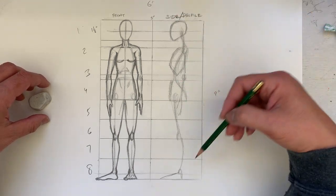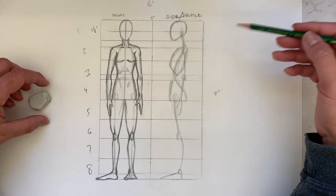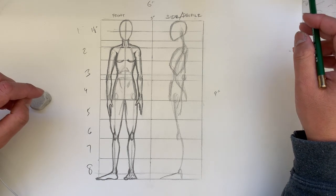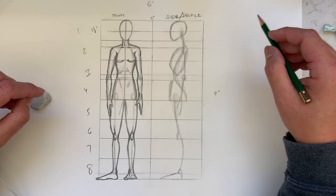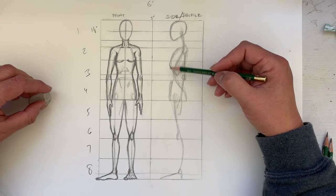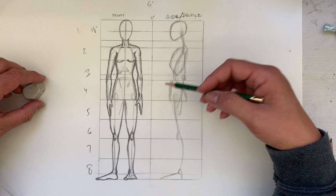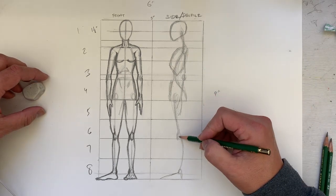So this is our basic kind of artsy skeleton where we're going to build our musculature on top of. Musculature and fat and all the other elements that make a human form.